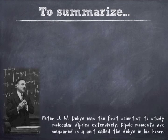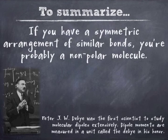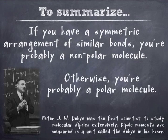So if you're looking for a summary, a hard, fast rule, if you have a symmetric arrangement of similar bonds, which sounds like a mouthful, but that's about as simple as I can get it, you're probably a nonpolar molecule. Meaning that even if you have bond polarity, they're going to cancel each other out. So, you're going to have a nonpolar molecule. Otherwise, whether you have unshared pairs on the central molecule or an unequal arrangement, then you're going to be polar.